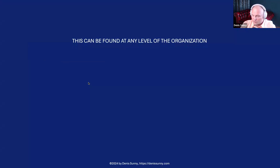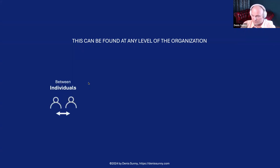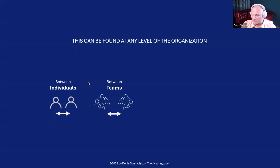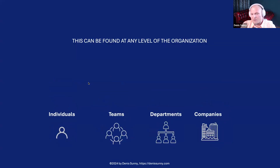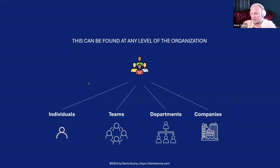These examples can occur at any level of the organization: between individuals within one team, between teams, between departments, or even between companies. Throughout this session, whenever you see the colorful icon I use, keep in mind it can represent an individual, a team, a department, or a company.